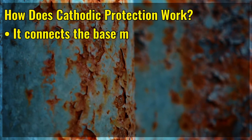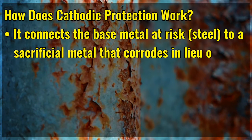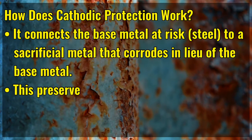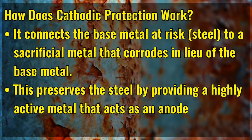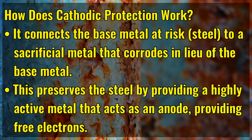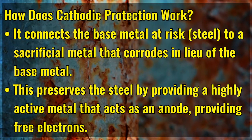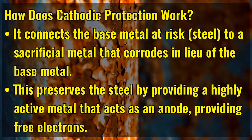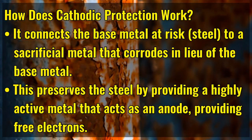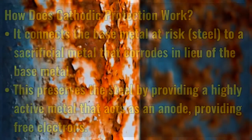How does cathodic protection work? It connects the base metal at risk to a sacrificial metal that corrodes in lieu of the base metal. This preserves the steel by providing a highly active metal that acts as an anode, providing free electrons.